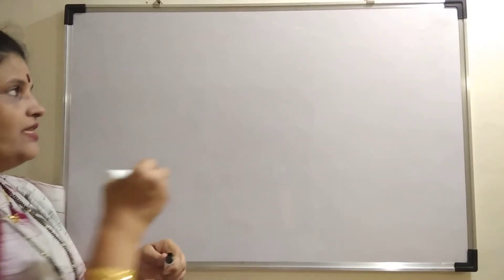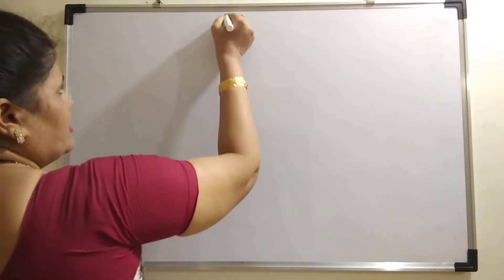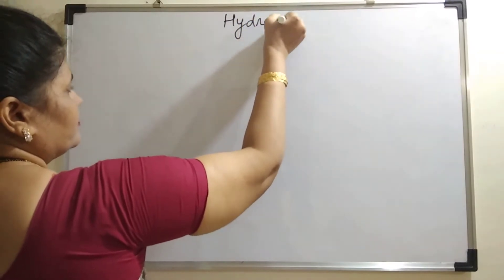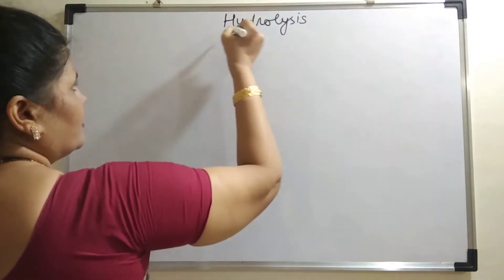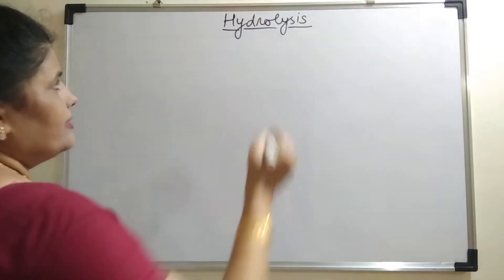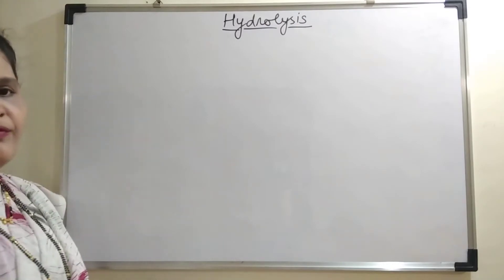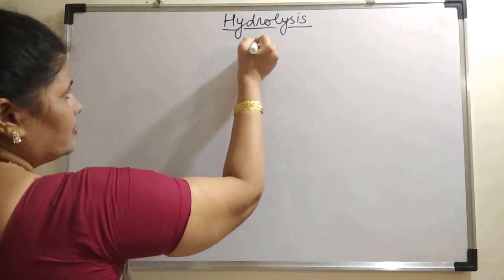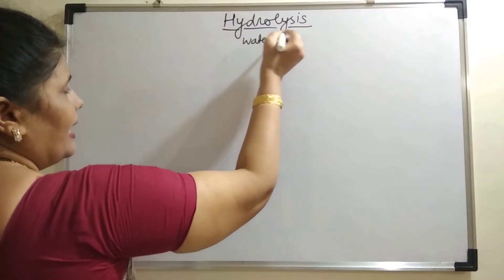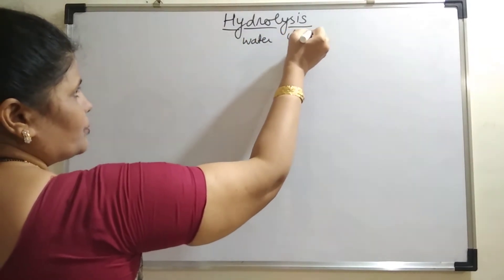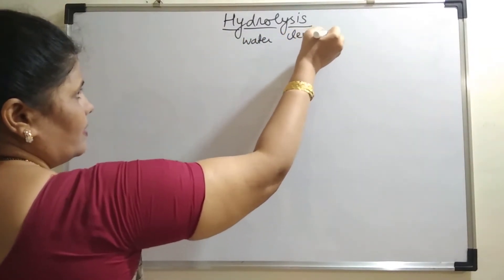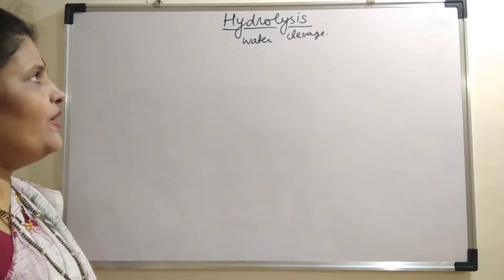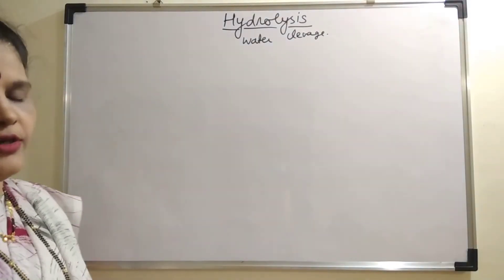In today's video we will see what is hydrolysis. This word hydrolysis is made from two terms. The first is 'hydro' which means water, and 'lysis' which means cleavage. When the bonds get broken up because of water, we call that hydrolysis.